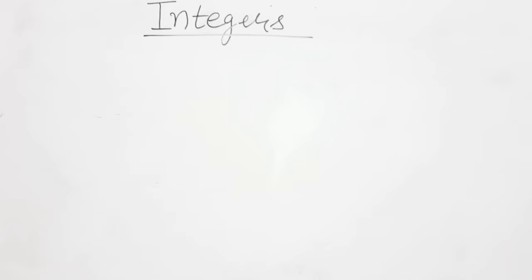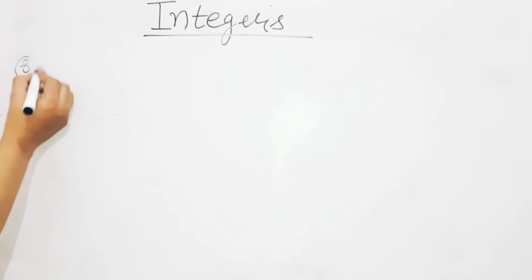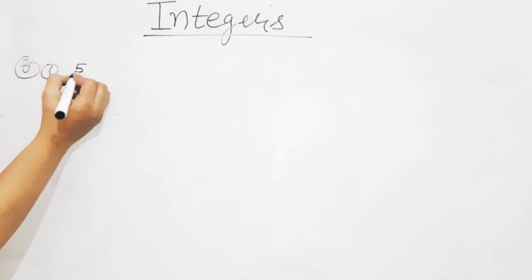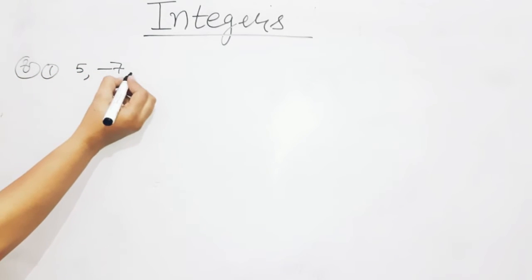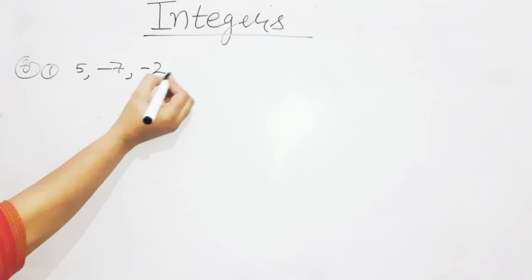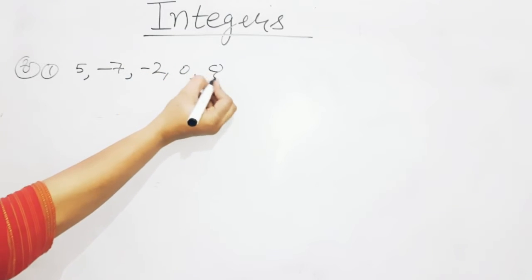Question number 8: write the following integers in the increasing order. Increasing order means ascending order. Ascending order means you have to arrange the integers from the smallest to the largest — chote se bada. So the first option is 5, minus 7, minus 2, 0 and 8.